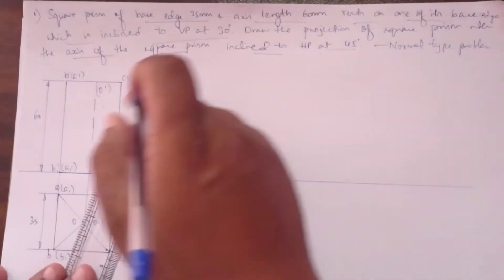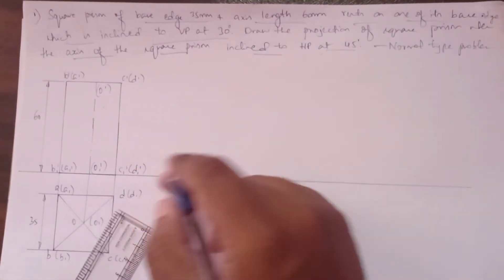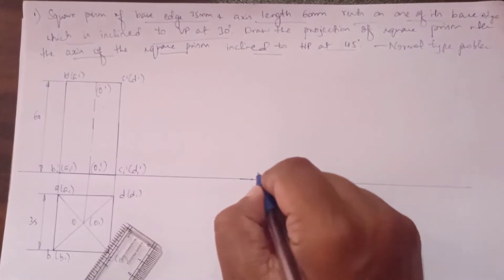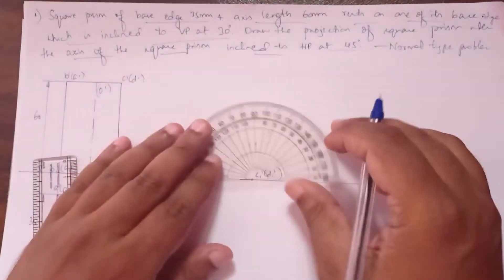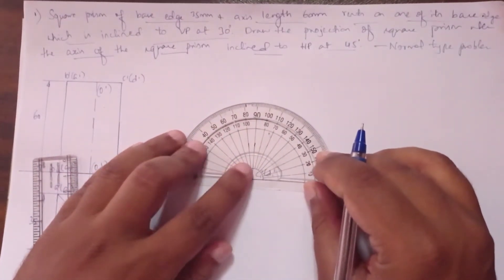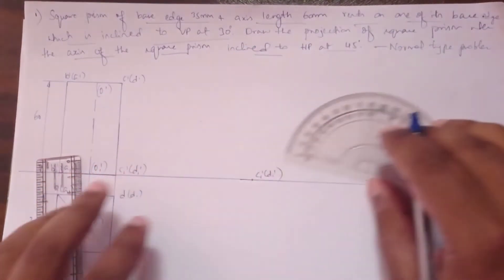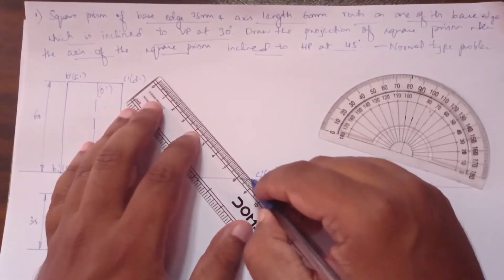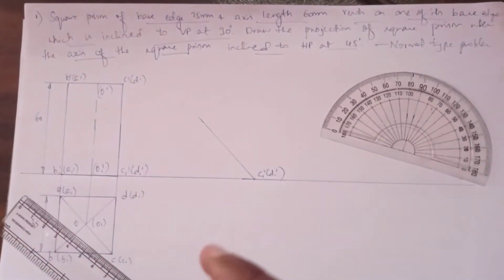Now, the angle of inclination to HP is given as 45 degrees, so we proceed with the base edge inclination. Take reference of c1-dash and d1-dash, use a protractor and mark 30 degrees, then draw the angle. Take the compass.